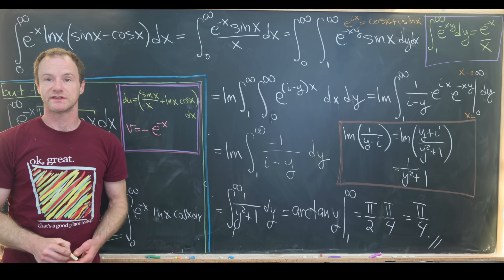That leaves us with the integral from one to infinity of one over y squared plus one dy — a standard form whose anti-derivative is arctan of y evaluated from one to infinity. As y goes to infinity, arctan goes to pi over two, and arctan of one equals pi over four. So we get pi over two minus pi over four, which gives us pi over four as our final answer.